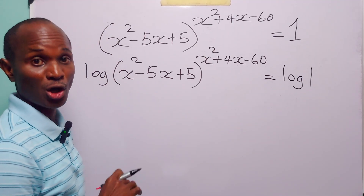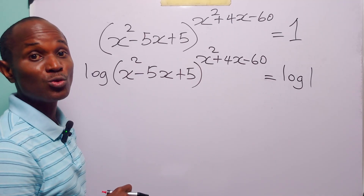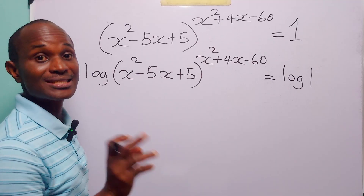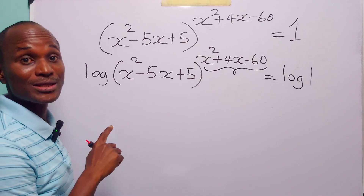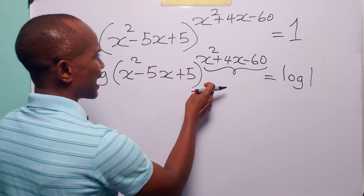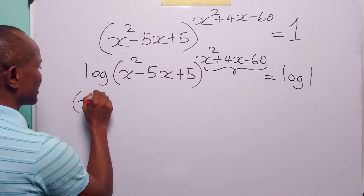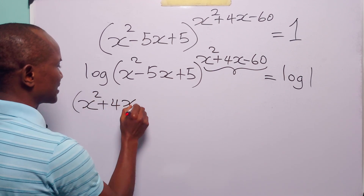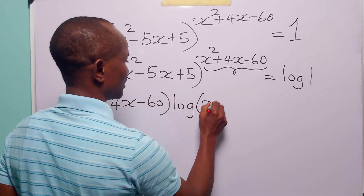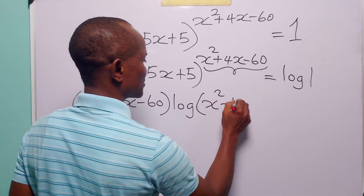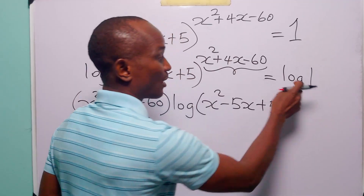Remember that when we write log without specifying the base, it means we are working in base 10 — common logarithms. The next step is to apply the power rule of logarithms to the left-hand side. That rule says we can bring down the exponent to the front of the log term to become a multiplier. So the left-hand side becomes (x² + 4x - 60) times log(x² - 5x + 5).